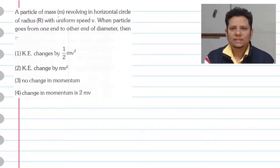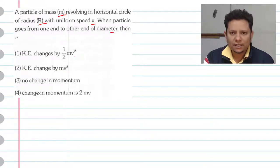Next question. A particle of mass m revolving in a horizontal circle of radius r with uniform speed v. When particle goes from one end to the other end of a diameter, then kinetic energy changes by this, no change in momentum, change in momentum is 2mv. Now again, simple question.